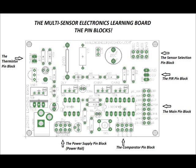The comparator pin block is where we control our two onboard comparators. The main pin block on the lower right is one of the most important pin blocks on the entire board, and it has all of our main signal inputs and outputs. The PIR pin block is where we'll connect our PIR accessory. There are three pins: ground, signal out from the PIR, and 5 volts to power the PIR sensor.